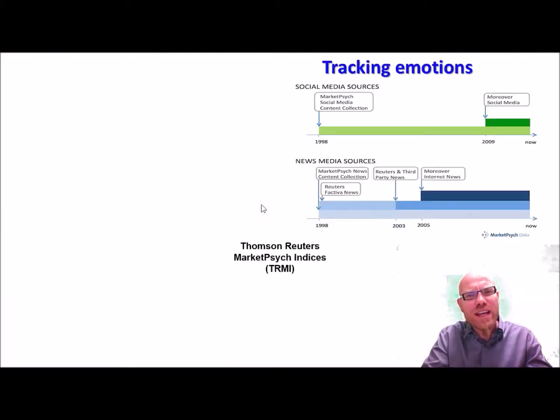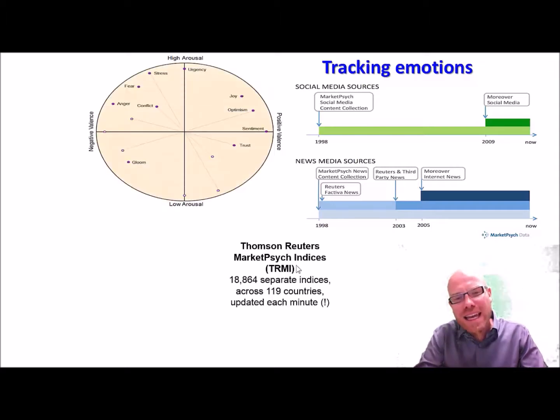Another example is the tracking of emotions. Since we leave a lot of our status updates online, this information is being used in order to create a general sentiment of how an entire country feels. The news company Thomson Reuters and this company MarketPsych created 18,000, almost 19,000 distinct indices in about 120 countries about how people feel.